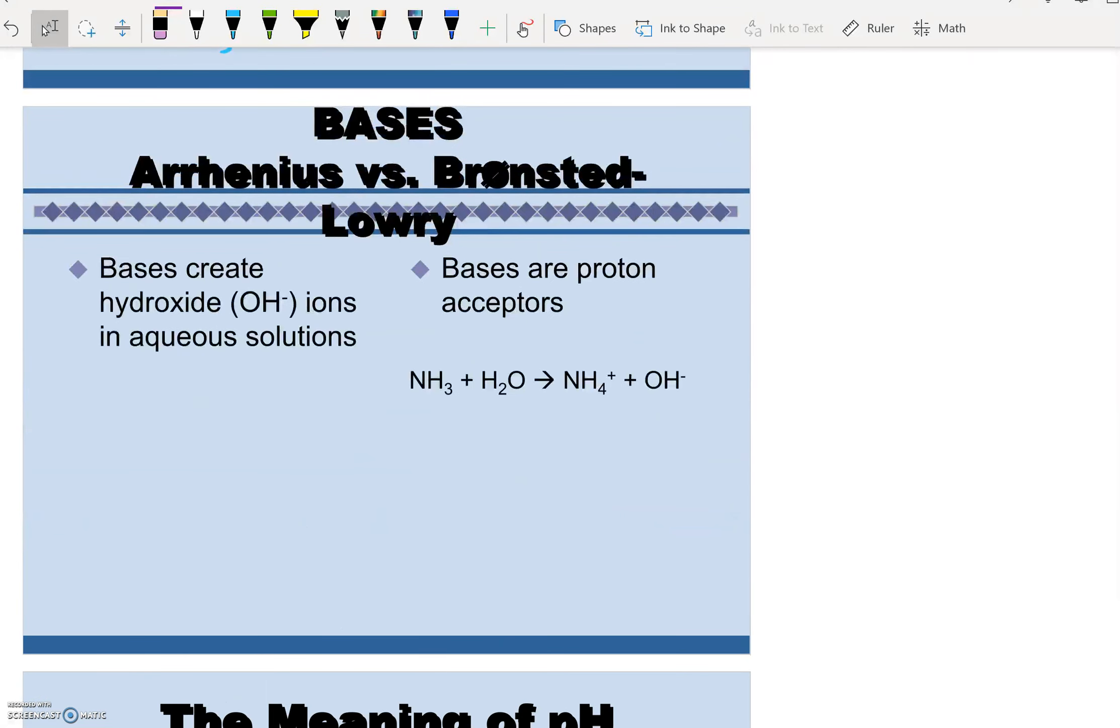Bases. Arrhenius says that bases create hydroxide ions. So we're going to start seeing this come into play in a little while. But again, Bronsted-Lowry, this definition that I'm putting a box around, says that bases are proton acceptors, is a more commonly used definition.